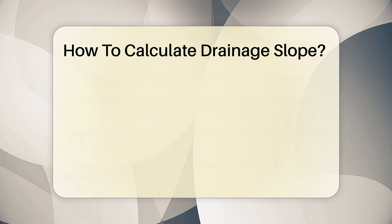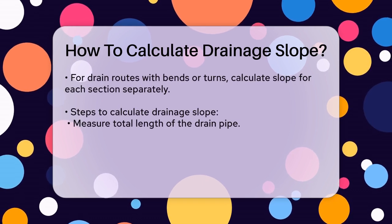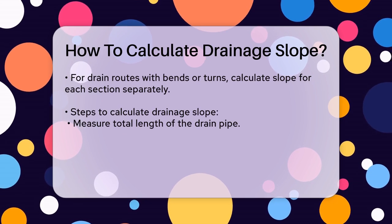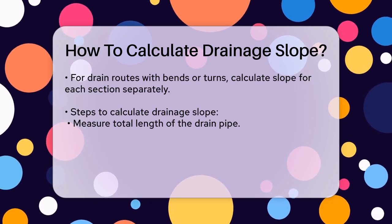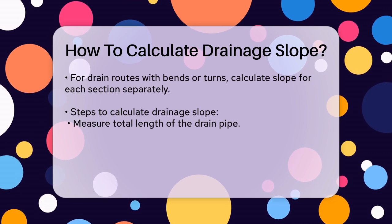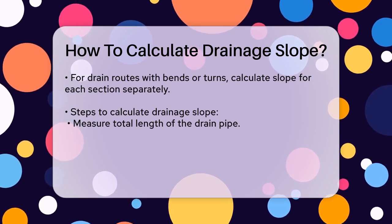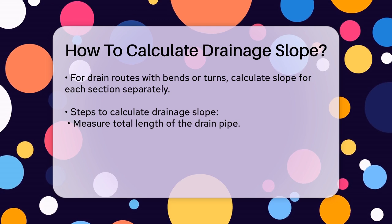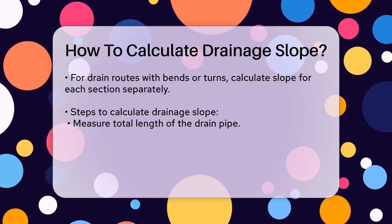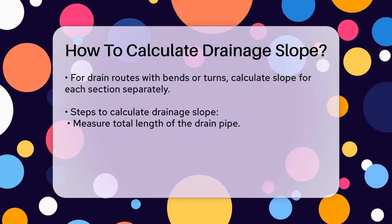Another way to look at this is by using the formula for pipe slope. The pipe slope (PS) is calculated by dividing the pipe fall (PF) by the pipe length (PL), and then multiplying by 100 to get a percentage. For instance, if the pipe fall is 25 feet and the pipe length is 97 feet, the calculation would be: PS = 25 ÷ 97 × 100 = 25.77%.